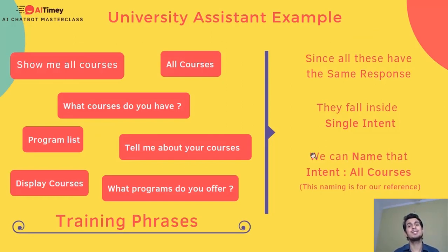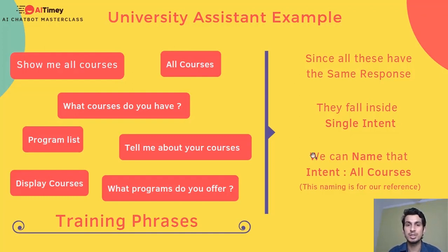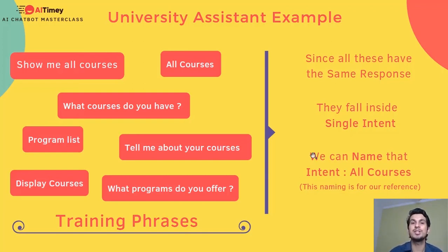Let's take the example of a university chatbot assistant. Say a student comes and needs to see all the courses provided. What could the student say to the chatbot? They might say: 'show me all courses,' 'all courses,' 'what courses do you have,' 'program list,' 'tell me about your courses,' 'display courses,' 'what programs do you offer.' These are the questions the student is going to say to get information about courses.